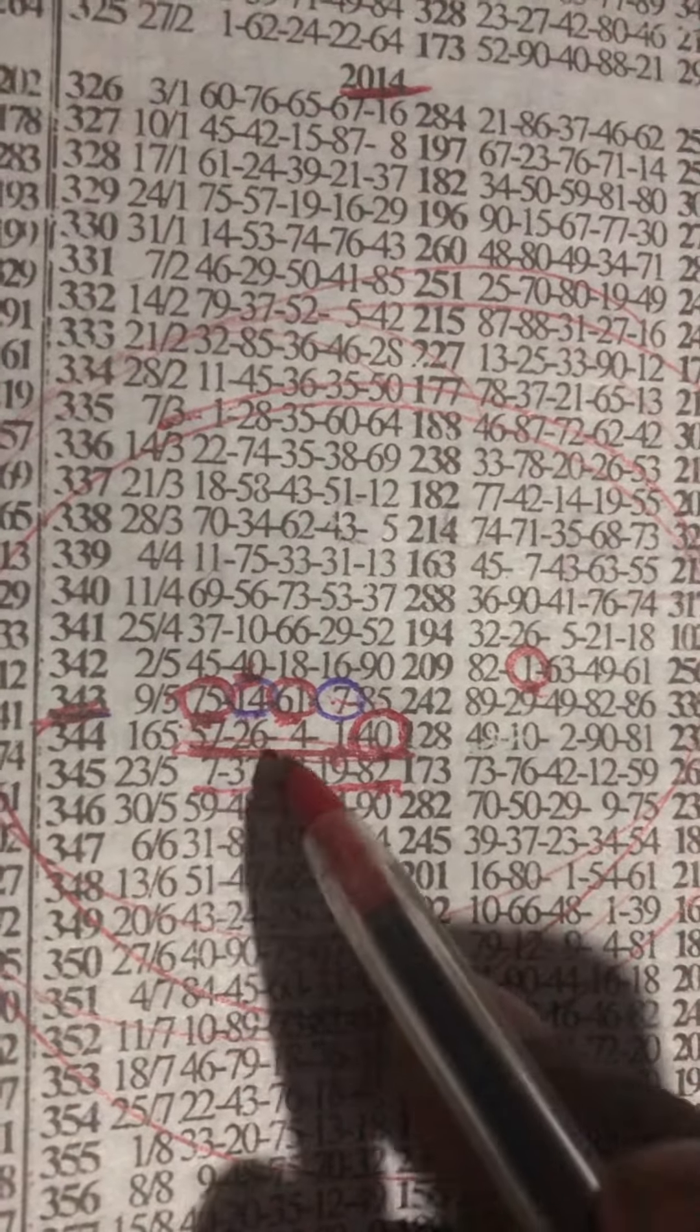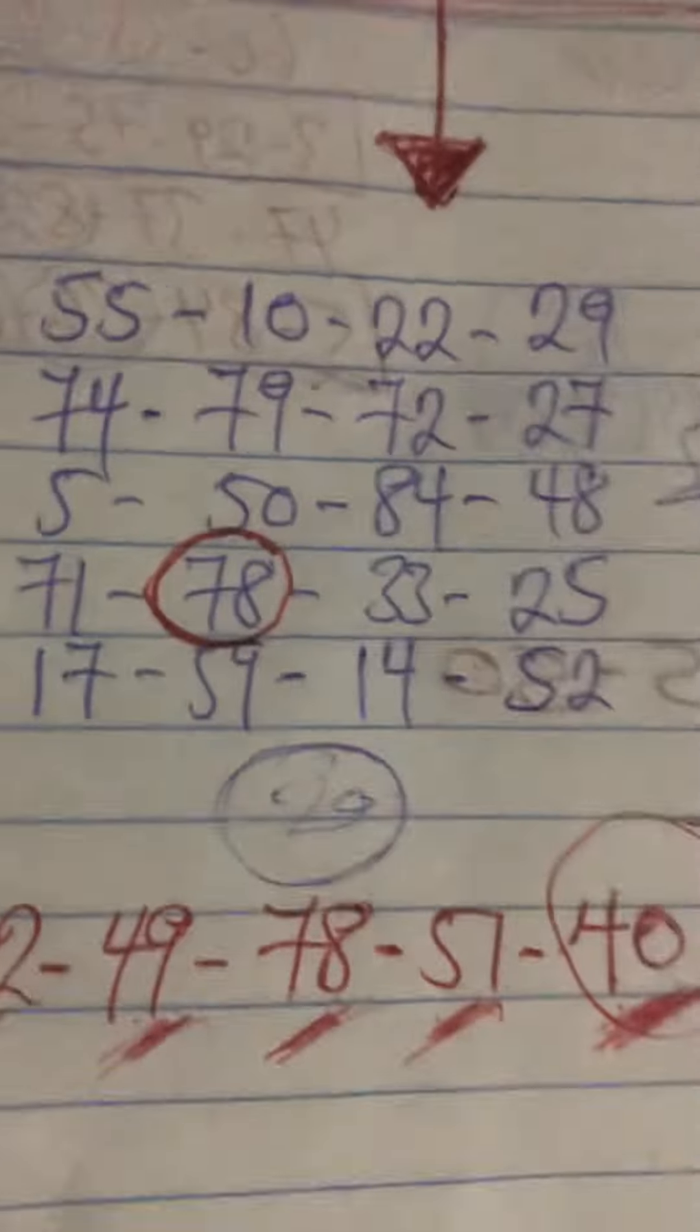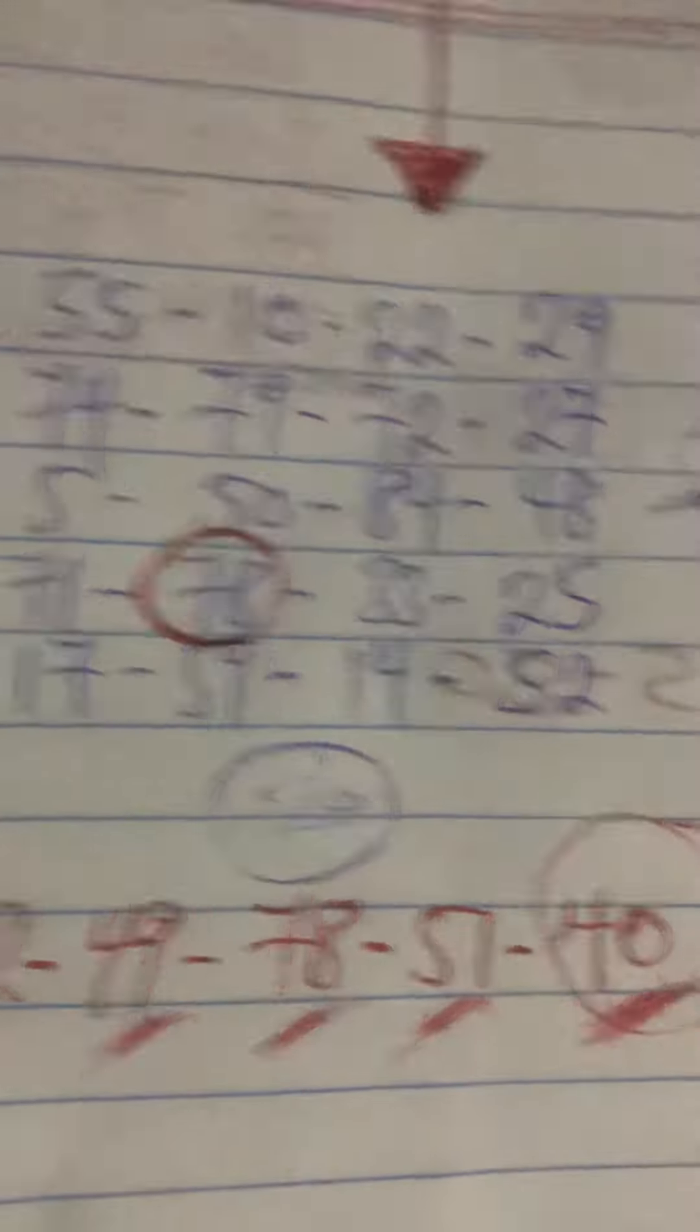The next event is 37, 28, 19, and 82, okay. And then our moving numbers as well, we got 78, and that will continue next week as well.